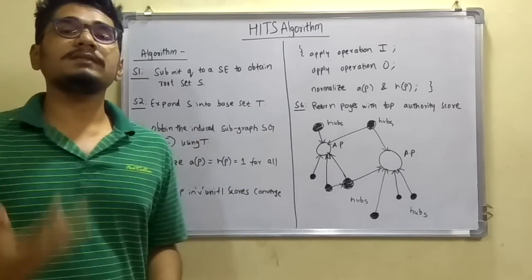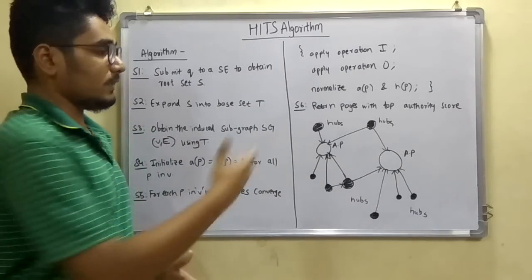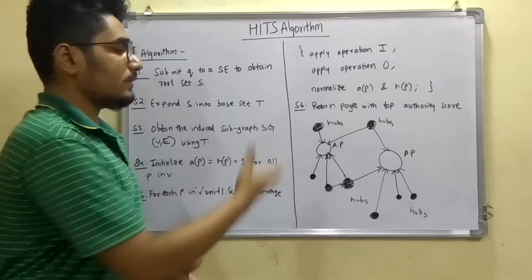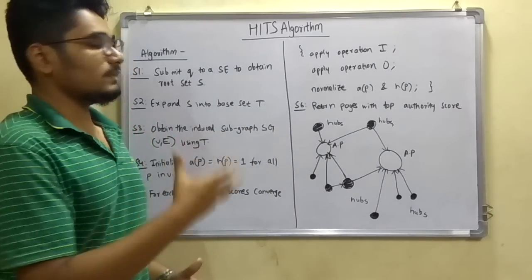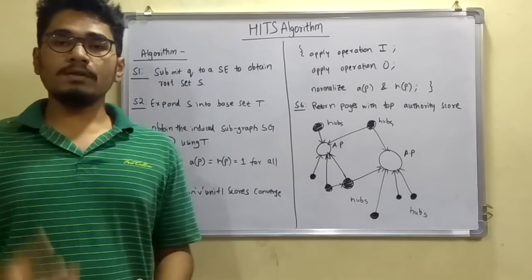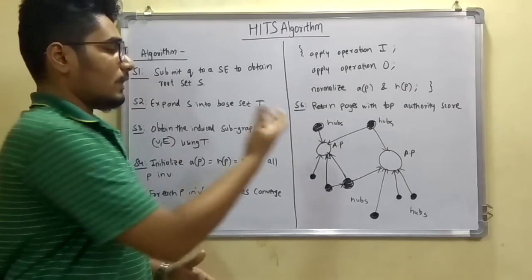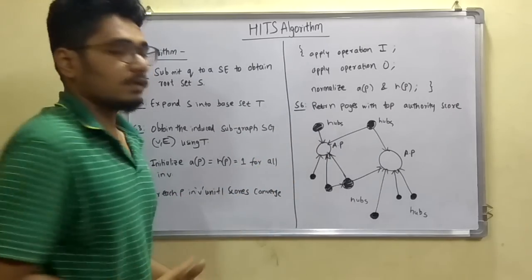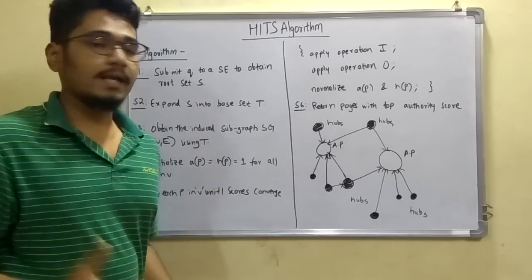And these hubs basically provide the outward linking, that is all the edges are pointing towards these authority pages. Now these hubs function in this manner that if one particular information is not available from any of the AP,